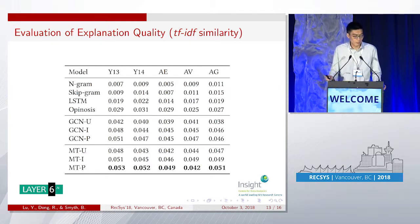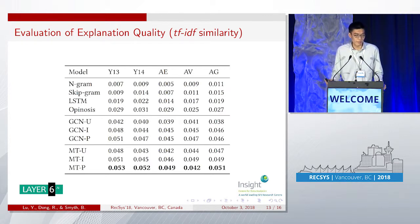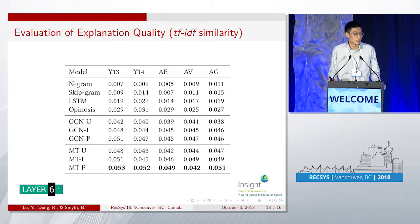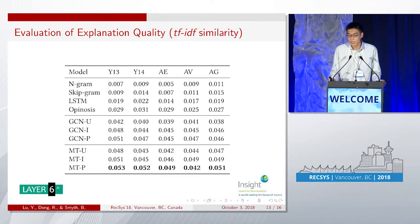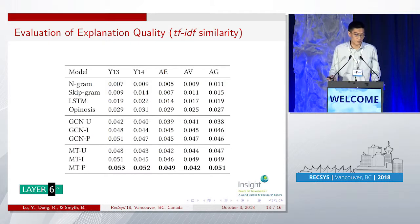We also observe that moving from user-specific to item-specific and then to personalized explanations, the results improve. This indicates there is an increased amount of information contained in user-item pairs compared to individual users or items alone.